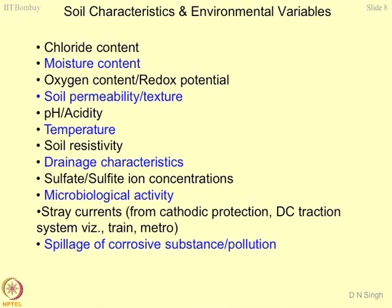A good example of cathodic protection would be putting a copper plate on a sheet pile, particularly for waterfront structures. Copper is a good cathodic protection material — it stops corrosion of the structure because of the protection it provides.